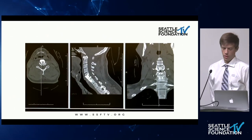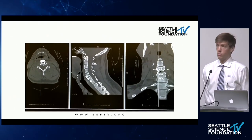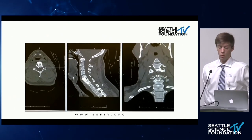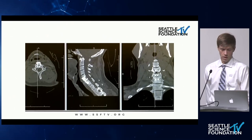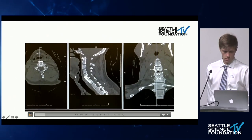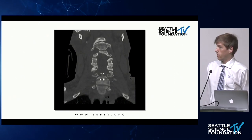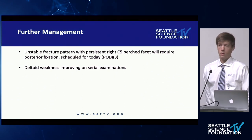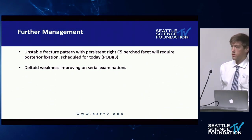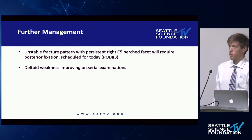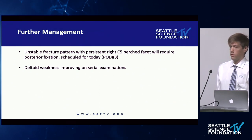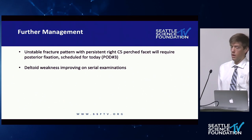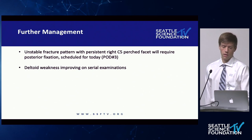Additionally, on the coronal view, you can see that some of the inferior hardware replacement screws were placed through the fracture, which actually widened the transverse fracture there. Given the unstable fracture pattern and the persistent right C5 perched facet, he is scheduled for posterior fixation surgery on postoperative day three. His deltoid weakness was improving: motor strength was three out of five on postoperative day one, and four out of five by postoperative day two.